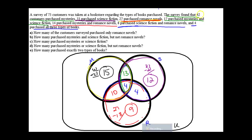Lastly, before answering some of these questions, we had 73 total customers surveyed. I need the sum of all regions: 15, 13, 12, 10, 4, 4, and 9 — I get a total of 67. Then 73 minus 67 would be 6. So there are 6 people who took the survey that did not fall into one of those categories.